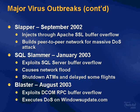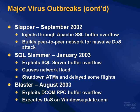Slapper in September of 2002 attacked an open SSL vulnerability in Apache server running on Linux systems to build a peer-to-peer network for a massive denial of service attack — the biggest Unix-related virus outbreak. SQL Slammer in January of 2003 exploited a SQL Server buffer overflow, caused a network flood, shut down ATM machines, and delayed flights. Blaster in August of 2003 exploited a DCOM RPC buffer overflow to execute a denial of service attack on WindowsUpdate.com. Amazingly, none of these were destructive — they were all essentially denial of service attacks, so we've been extremely lucky.